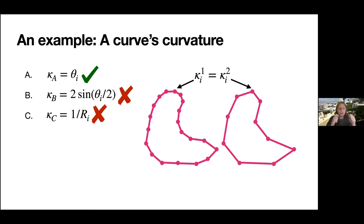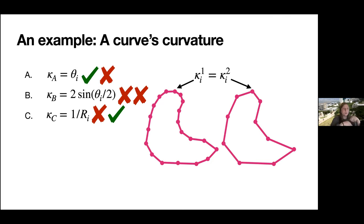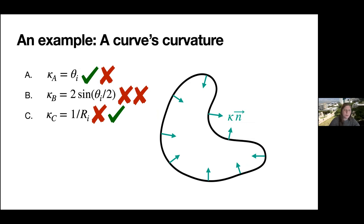Another property we'd like is stability to refinement. If I take a curve and upsample it, I hope the curvature at a point doesn't change much. Unfortunately, our first two definitions — which depend on the angle — don't satisfy this, because as we upsample, the local angle goes to zero, so the individual curvature at each point decreases as you refine the curve. This won't happen for the osculating circle definition. There may be some variance due to discretization error, but it doesn't grow steadily higher or lower, so the osculating circle is good for comparing between different curves.